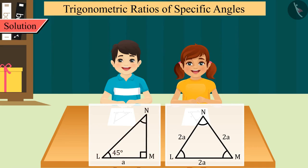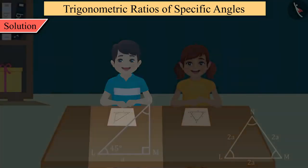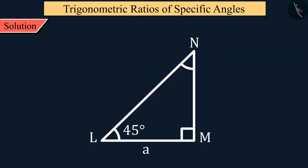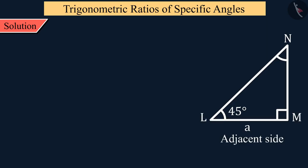Let us first learn about trigonometric ratios of the 45-degree angle. Raj has a right-angled triangle LMN where the value of angle L is 45 degrees. The length 'a' of the adjacent side LM is known to us. Find all trigonometric ratios of the 45-degree angle.